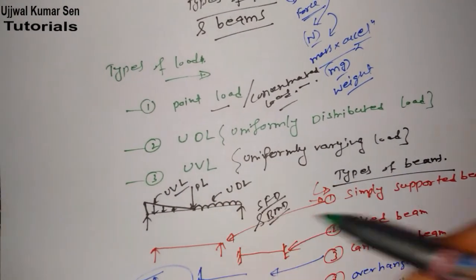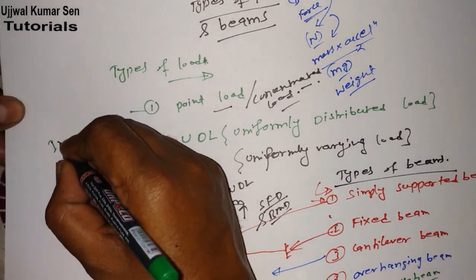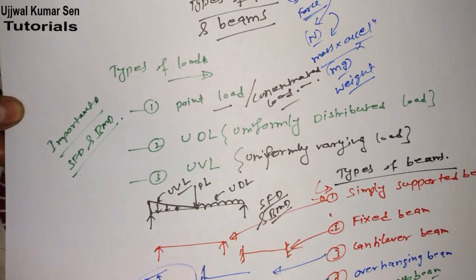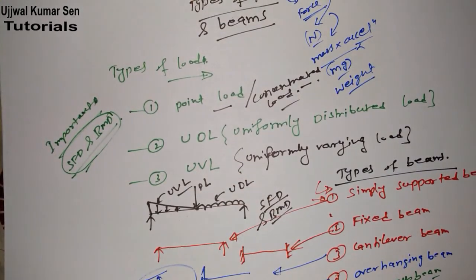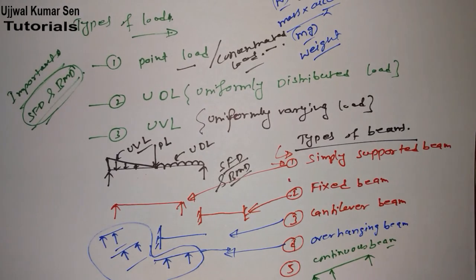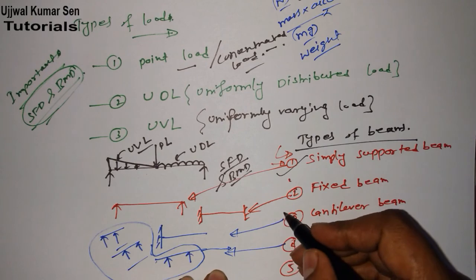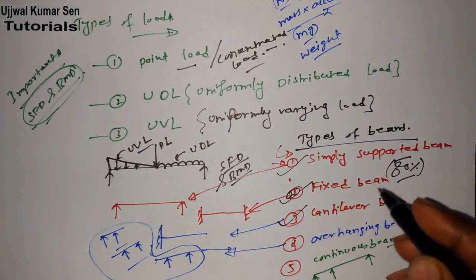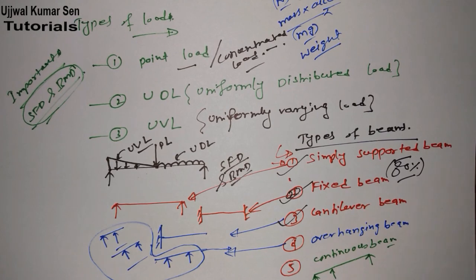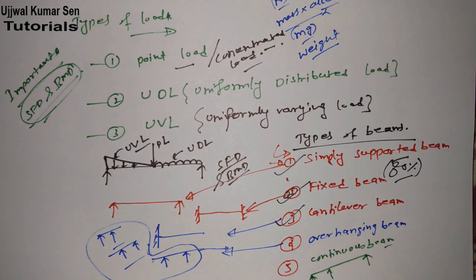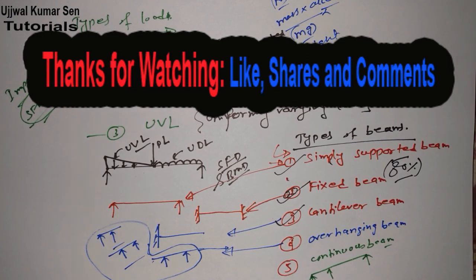So what we've studied in this video: five types of beams, three types of loads. Now, which beams are most important for shear force and bending moment diagrams? Most students struggle with this. There are only two types of beams that are really important: first is simply supported beam and the second is cantilever beam. I've seen 80% of questions asked in university examinations come from these two beam types only. For competitive examinations they can ask from any type, but these two are really, really most important.